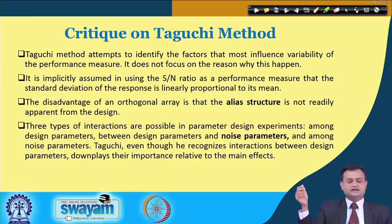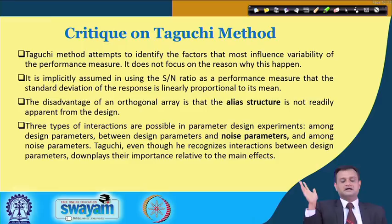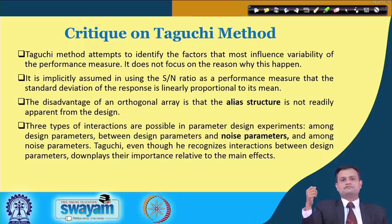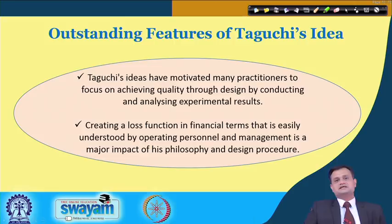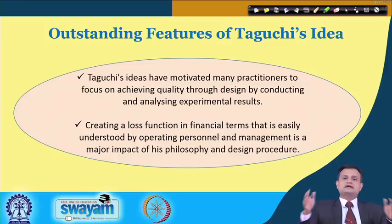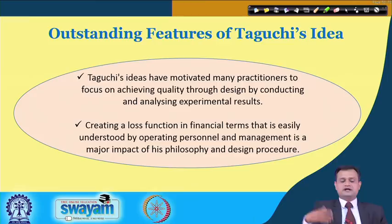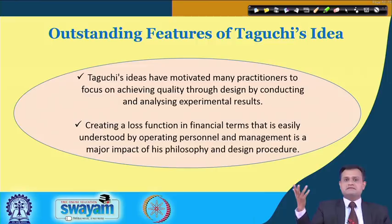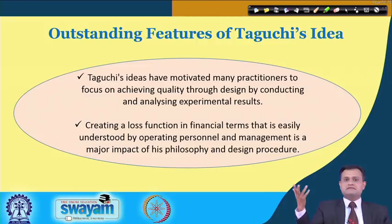Three types of interactions are possible: among design parameters, between design and noise, and among the noise factors. Taguchi recognizes interactions between design parameters but downplays their importance relative to main effects — this is accepted as a drawback. Despite these criticisms, Taguchi method has given excellent results. The robust design concept, the S/N ratio, and the loss function expressed in financial terms — easily understood by management and operating personnel — have had major impact and motivated many practitioners.